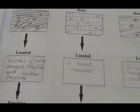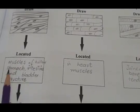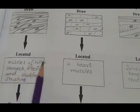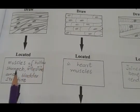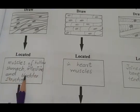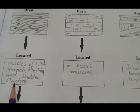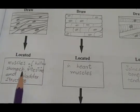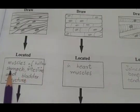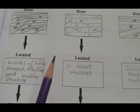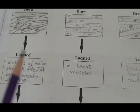If I talk about smooth muscles, they are located in the hollow stomach, intestine, and bladder. They make up the entire hollow organ structure.